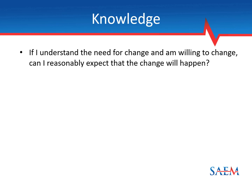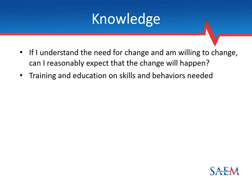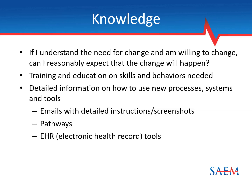Next is knowledge. If someone understands the need for change and is willing to change, can we reasonably expect it will happen? What are the barriers? It often involves training and education on new skills or behaviors. We can provide detailed information on new processes, systems, and tools via emails or instructions with screenshots. Pathways or documents can be made immediately available to people working on shift, and the electronic health record with order sets can also be helpful.